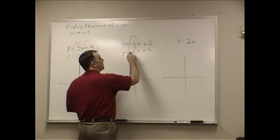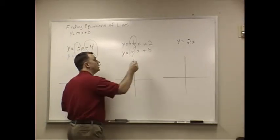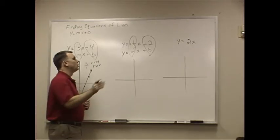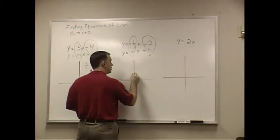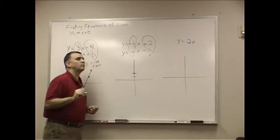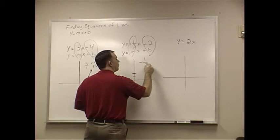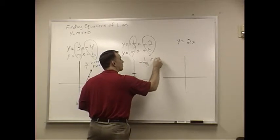So my m value is negative on this one. And my b value is 2. So I'm going to go to 2 right here. And then sometimes students ask on this negative that's out in front. So I'm going to write negative 1 third. I'm going to write the word rise. I'm going to write the word run.